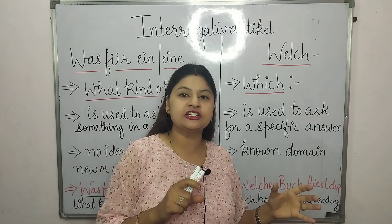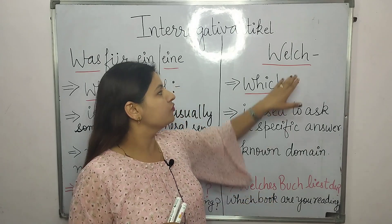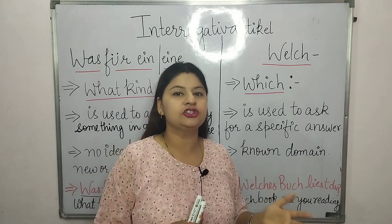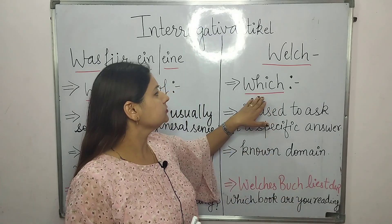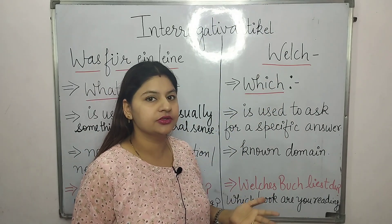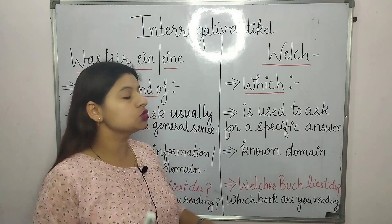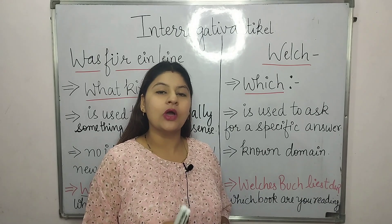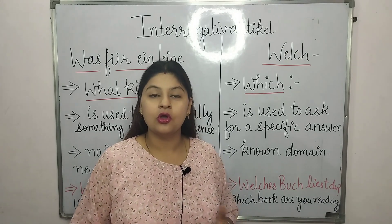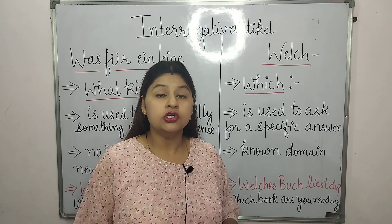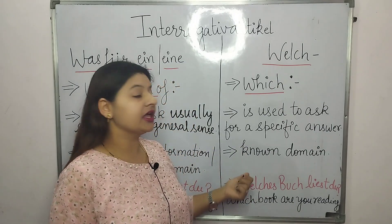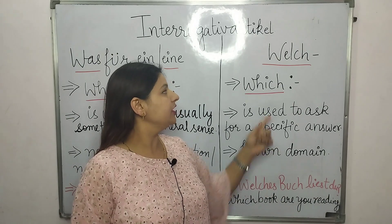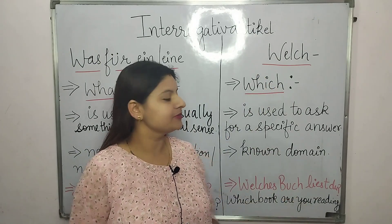'Welcher' has endings according to gender: masculine 'Welcher,' feminine 'Welche,' neuter 'Welches.' The literal translation is 'which.' It is used to ask for a specific answer — 'which book are you reading?' So I am reading the book of J.K. Rowling, or I am reading the book of Chetan Bhagat. I have information here — something known.